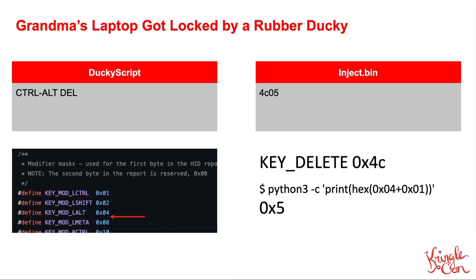I was curious how Control+Alt+Delete would work, since I assumed it was only these two-byte words that encoded all the information. How would we encode multiple modifiers? If I put Control+Alt+Delete into a ducky script, I get out 4C 05. 0x4C is Delete, and 0x05 doesn't appear on its own in the modifiers list. But if you add the Control and Alt values together, you get 0x05. So when you're holding down multiple modifiers, the second byte is just the scan codes combined.